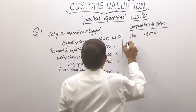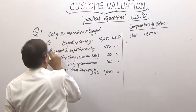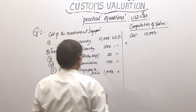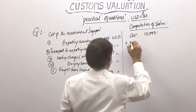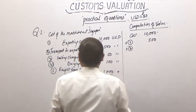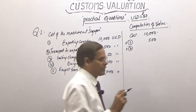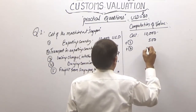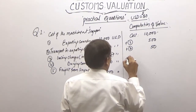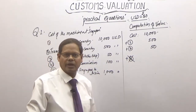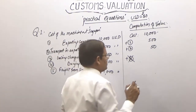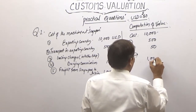Number two: add transport in the exporting country — $500. Number three: add loading charges into the ship. This brings us to FOB. Buying commission we do not add. Number four: add freight from Singapore to India — that is $1,000.